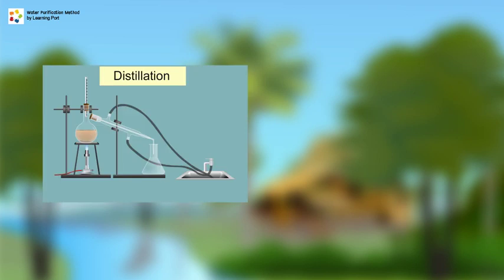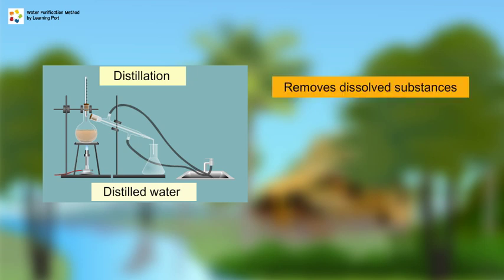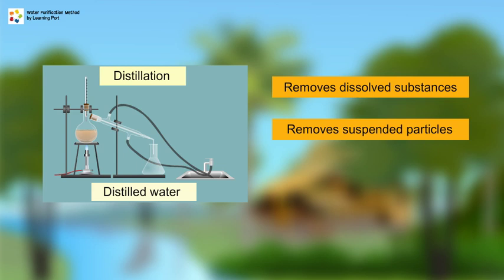Distillation involves heating of water until it vaporizes, then it is condensed. Water obtained from this method is called distilled water. Distilled water is a pure water, which is free from dissolved substances, suspended particles, and microorganisms.